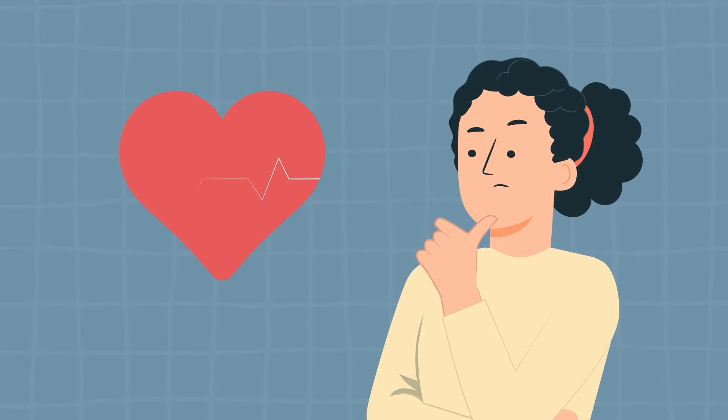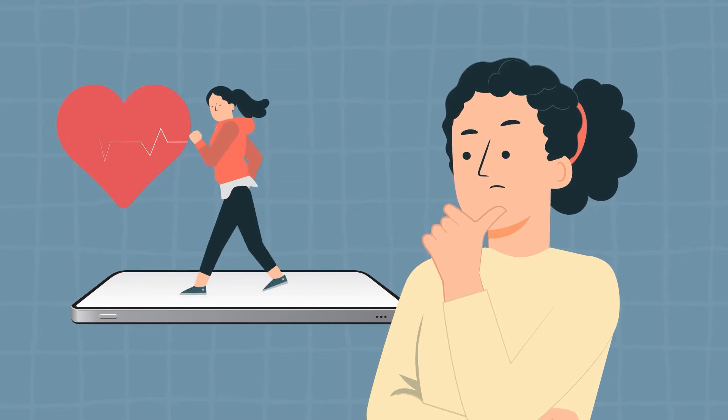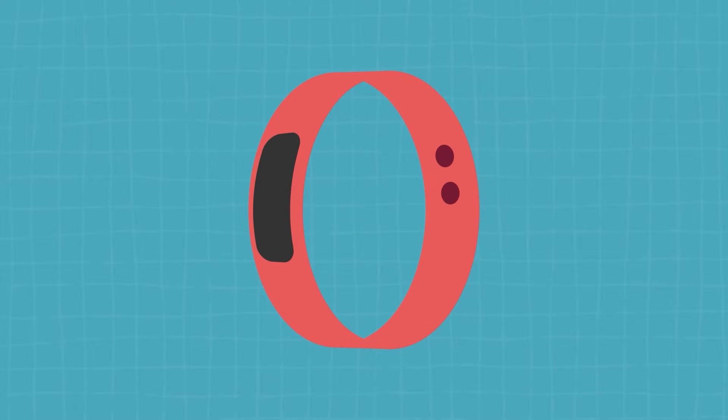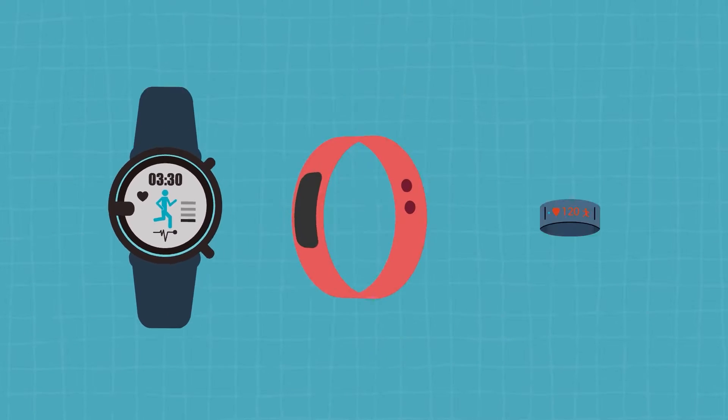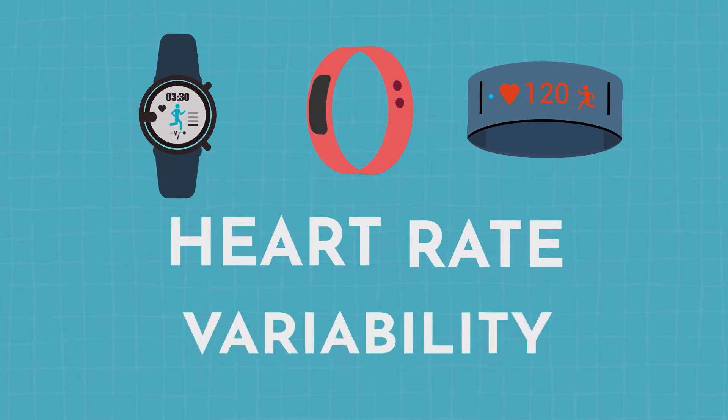Heart rate variability is a tool that I love because it's something you might not even realize you're tracking on a regular basis. I'm kind of a nerd and I love metrics. Right now I've got all these devices on — a wristband, a ring, my watch. They're all measuring different variables, but the one thing these have in common, and that a lot of health trackers you can wear have in common, is that they calculate something called heart rate variability.